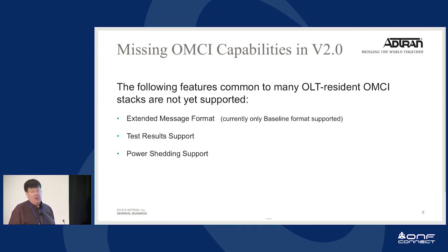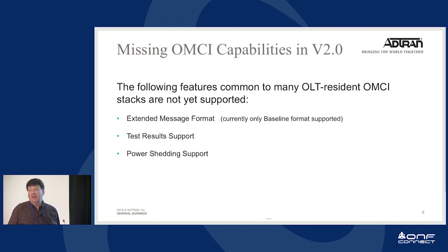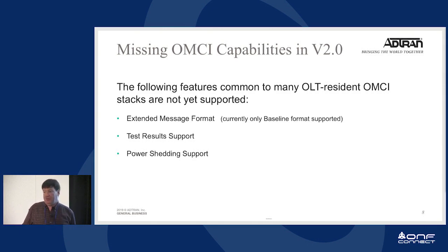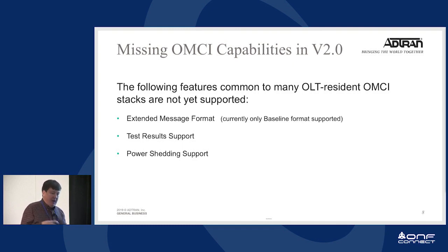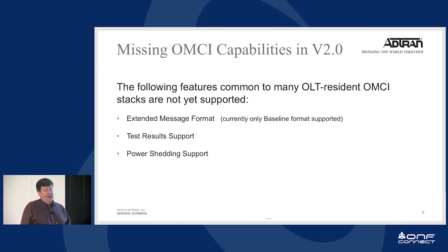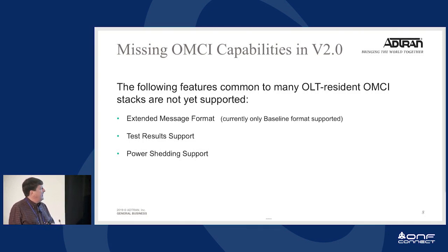There were several features we did not include that are typically common in an OLT. One is extended message format — with the amount of work we had and the ONUs we're initially working with, getting the baseline format right was the most important priority. You can issue a test and receive a test result in OpenOMCI, but we haven't made that more generic and easier to use yet. Also, there's no power shedding support — we want to provide more common ways to do power management on an ONU — and there's also no remote debug support.